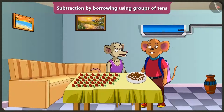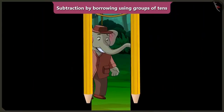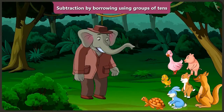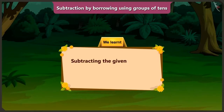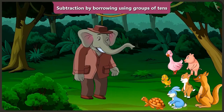Would you eat more chocolates? No, if I eat more chocolates, then my teeth will get cavities. That's right. Let us make a bouquet with these roses. In this video, you have learned subtracting the given numbers in groups of tens with the help of borrowing. In the next video, we will see how Chi-Chi and Choo-Choo use borrowing for subtractions while making a bouquet of flowers.